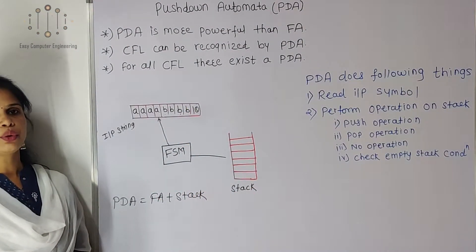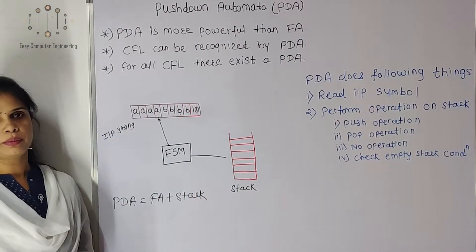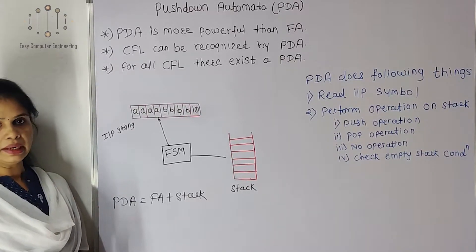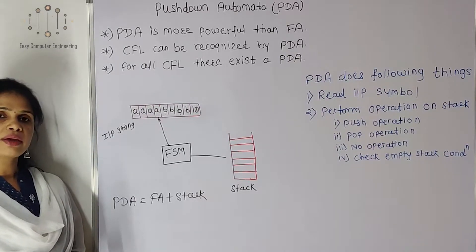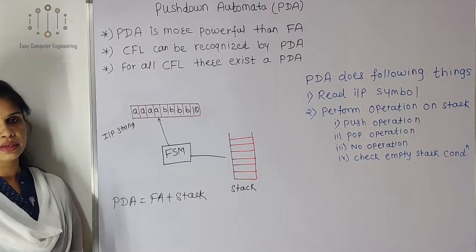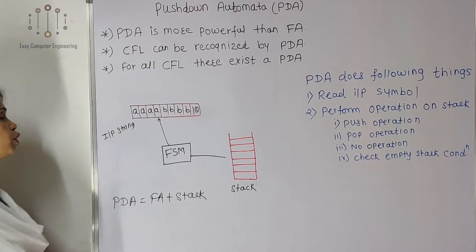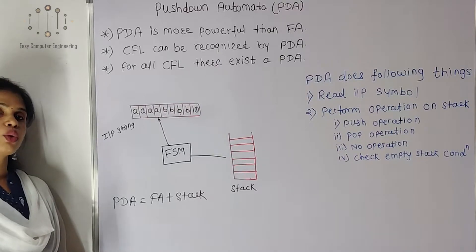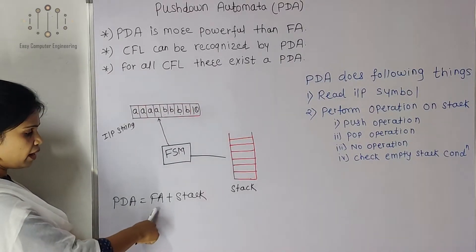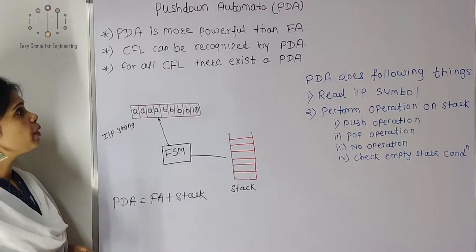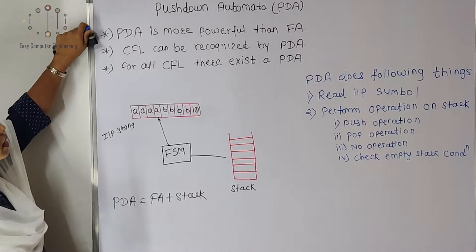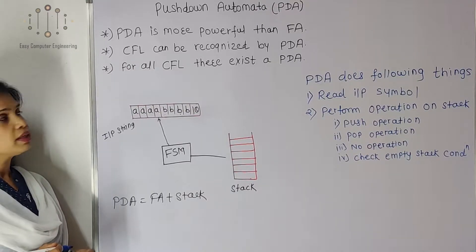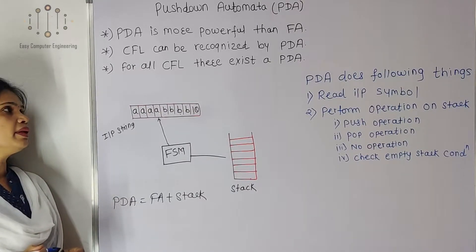In this video we will see Pushdown Automata (PDA). As we know, finite automata has many limitations — there are many languages which we cannot represent with finite automata. Pushdown automata is nothing but finite automata along with its own memory, that is a stack. PDA = finite automata + stack. Pushdown automata is more powerful than finite automata.